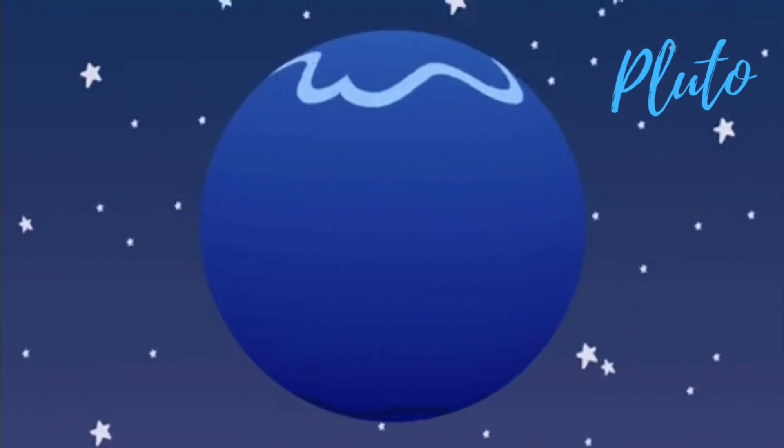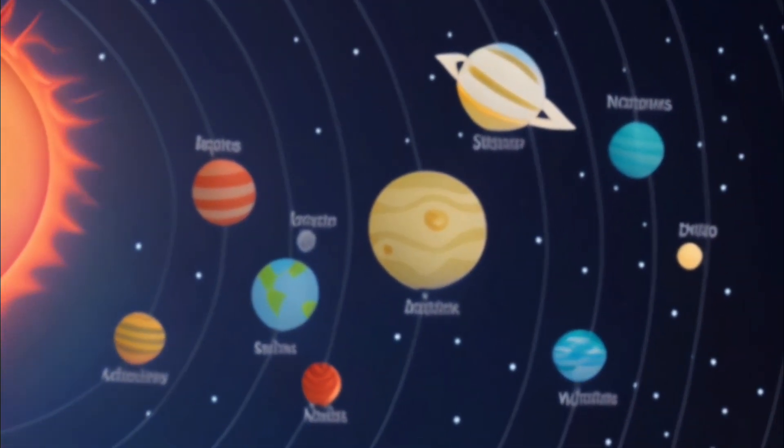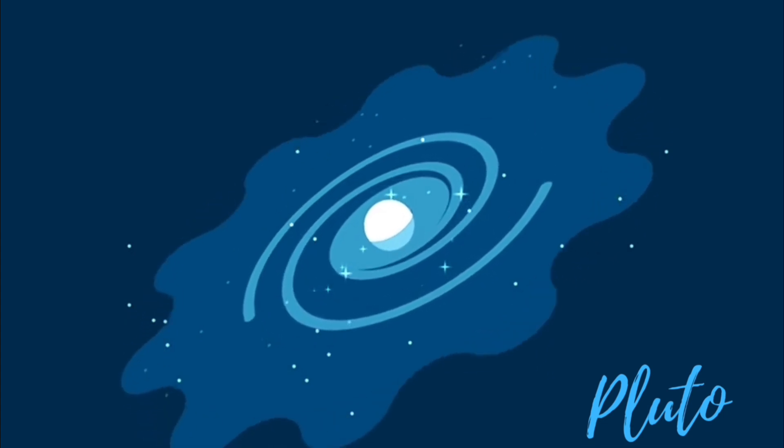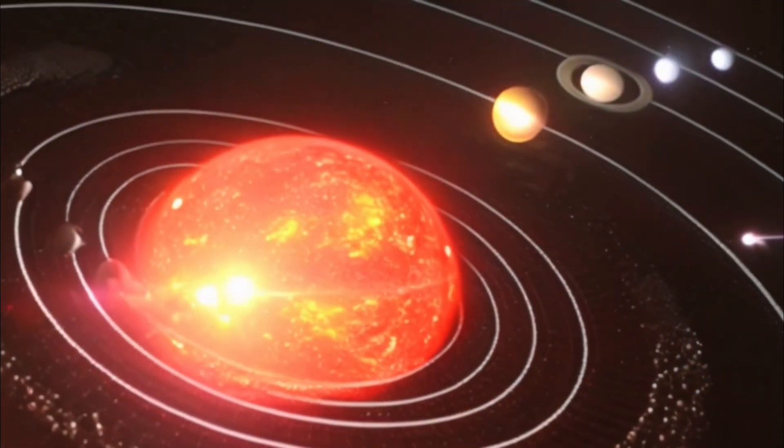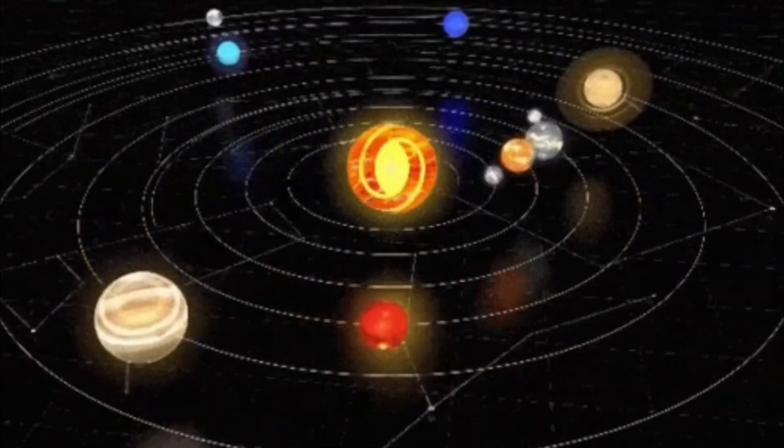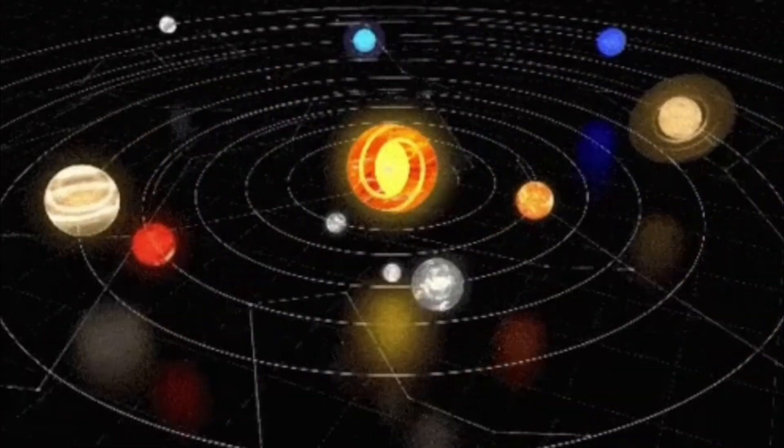Pluto used to be considered the ninth planet in our solar system, but in 2006, scientists decided to call it a dwarf planet instead. Pluto is smaller than the other planets. It has a heart-shaped area on its surface and is very cold and distant. It's still a fascinating member of the solar system.